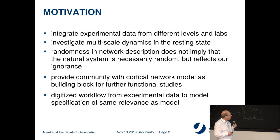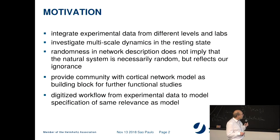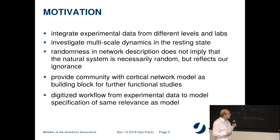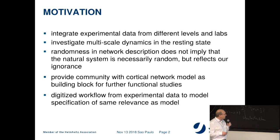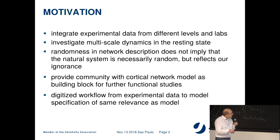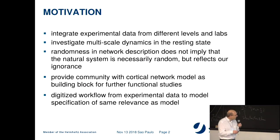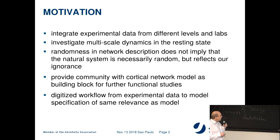The motivation here is to integrate the experimental data from different levels and different laboratories and to investigate the multiscale dynamics in the resting state. There is a lot of randomness in the description of the network structure, but this does not imply that the natural system is necessarily random — it just reflects our ignorance. The aim is to provide the community with cortical network models as building blocks for further functional studies, and also to provide the digitized workflow from experimental data to model specification.